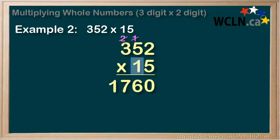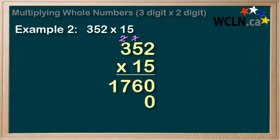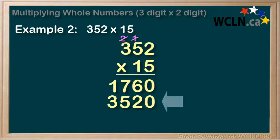Next, let's deal with the 1. But we note that it isn't just a 1 — it's in the 10 spot, so really it's a 10. The easiest way to deal with that is to put a 0 down here, and then we'll treat everything as a 1. The 0 will multiply the extra 10 for us. Now, we could go through each step, or we could remember that 1 times anything is just itself, and just write down 352 right here. Effectively, we're recognizing that 10 times 352 is 3520 — when we multiply by 10, we just add a 0 to the end.